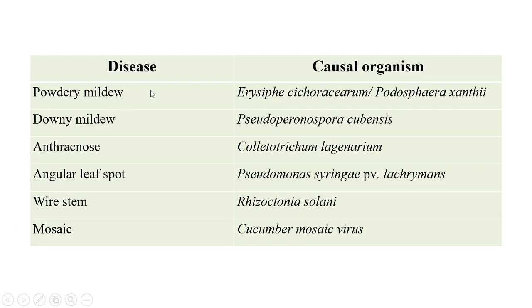The first disease is powdery mildew, caused by Erysiphe cichoracearum, with the new name Podosphaera xanthi. The second is downy mildew, caused by Pseudoperonospora cubensis. Next is anthracnose, caused by Colletotrichum lagenarium, and angular leaf spot caused by Pseudomonas syringae pv. lachrymans. Wire stem is caused by Rhizoctonia solani, and the last one is mosaic, caused by Cucumber Mosaic Virus.